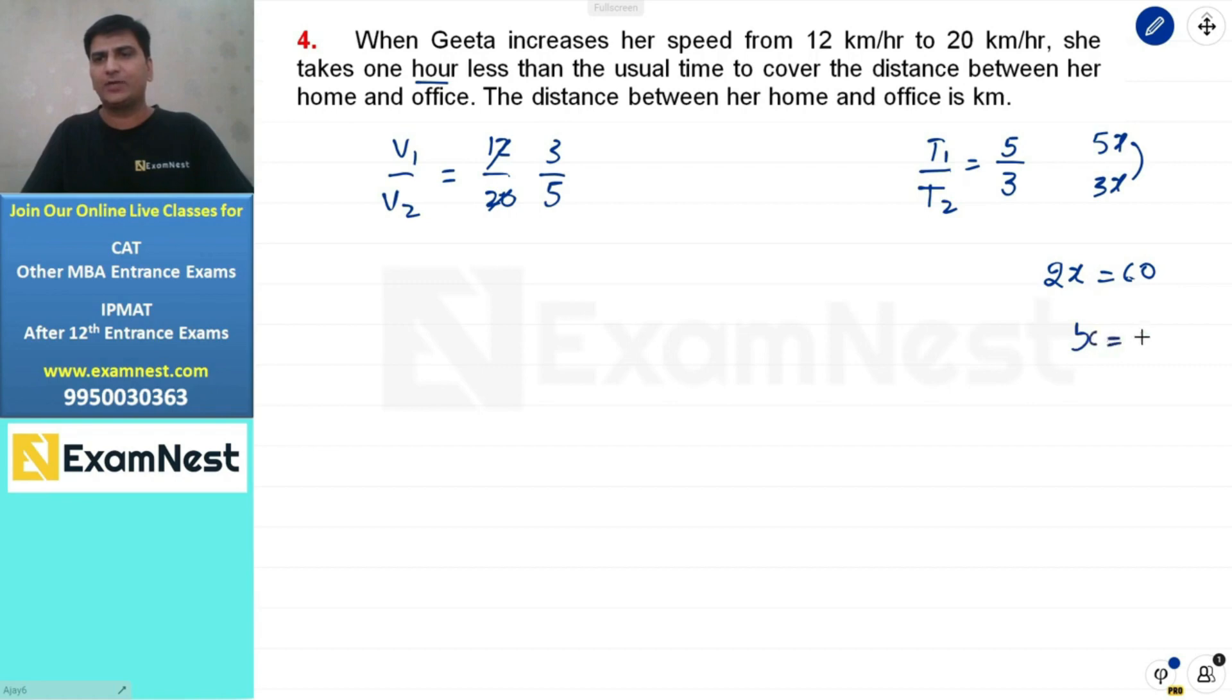So x is equal to 30 minutes. This means that the first time is 150 minutes, and the second time is 90 minutes. Can we find the distance? We have to multiply the speed by the respective time.